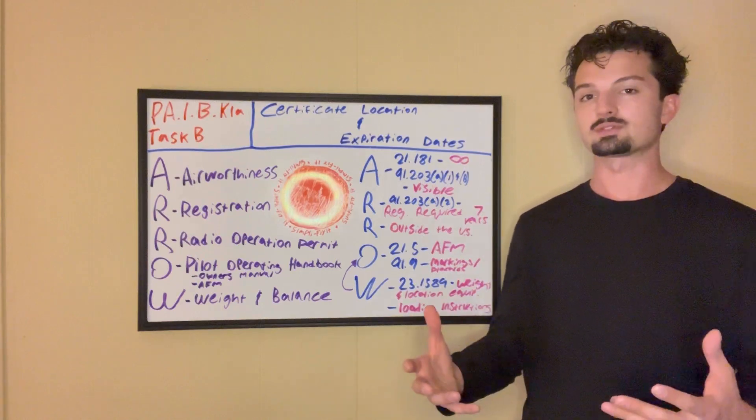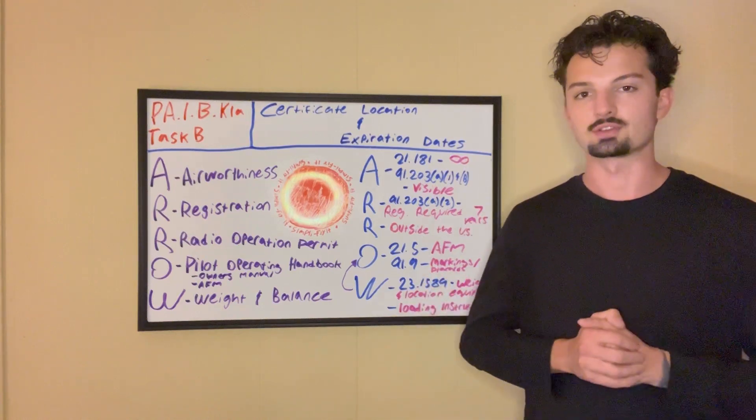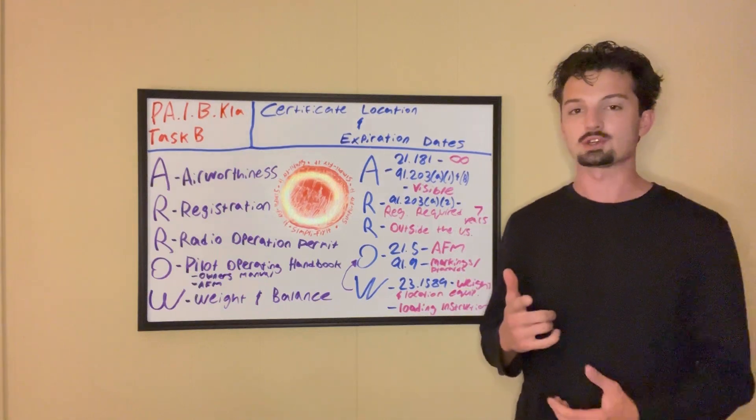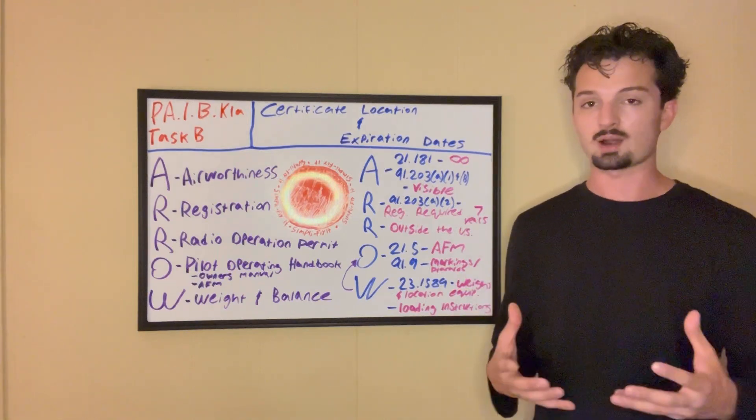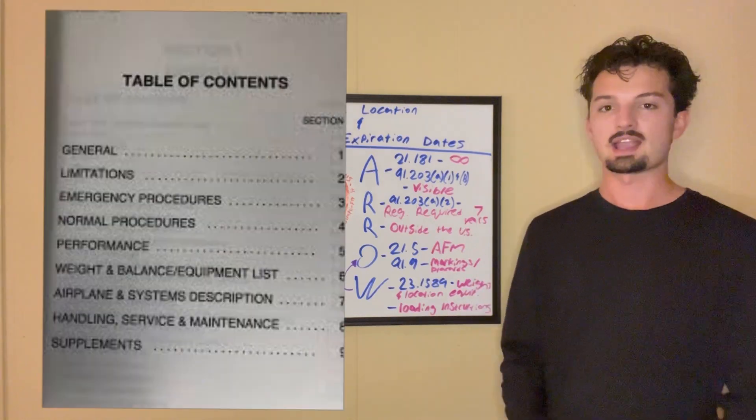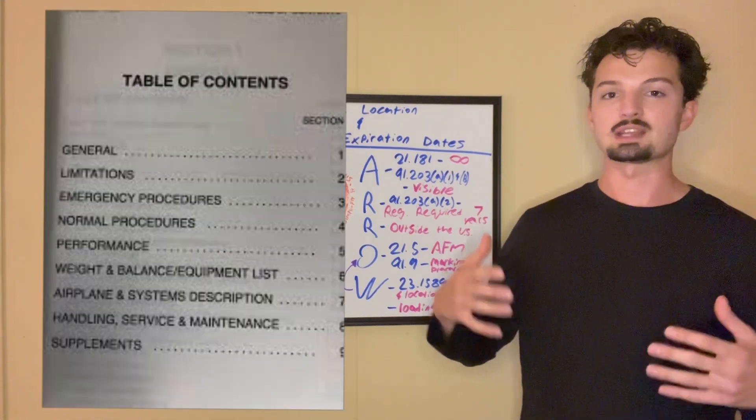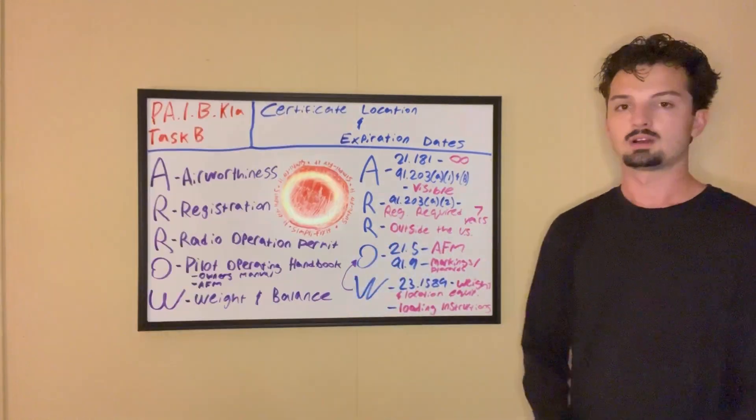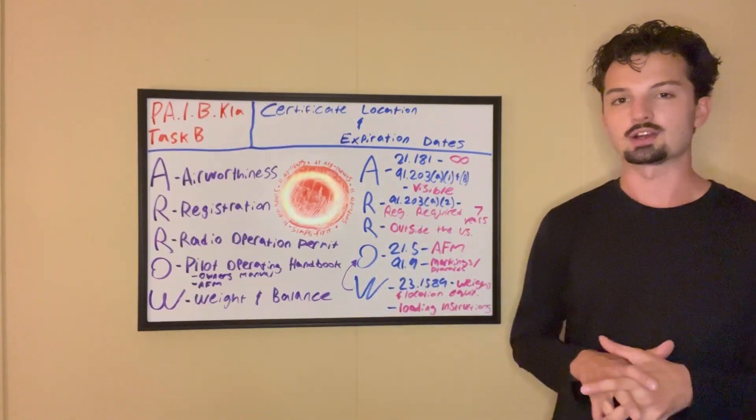As long as it does, either one is fine and both functionally serve the same purpose. What you need to know for your checkride is that there is an operating handbook for your plane. It has to be inside the plane anytime you're flying it. And it's information about the plane categorically laid out for you. All right. And the last letter in our acronym, AERO, we've got is W, which stands for weight and balance.